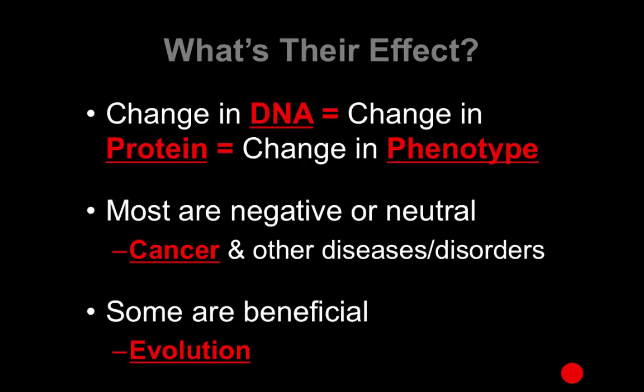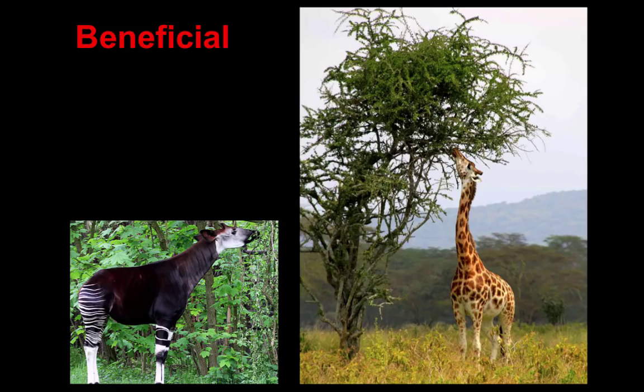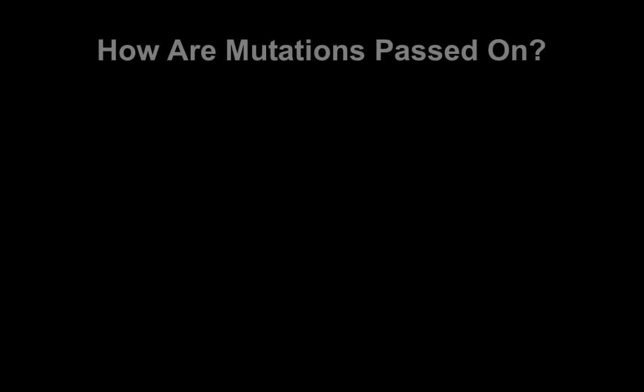Some mutations are actually beneficial, and they lead to what we call evolution. Here's an example: these two animals are cousins of each other. The one with a short neck has a lot of food around it within easy reaching distance, whereas the giraffe has a beneficial mutation resulting in a longer neck — it can reach higher and eat food that no one else can, which aids in its survival.